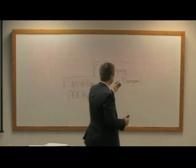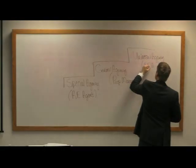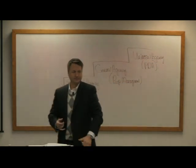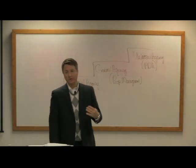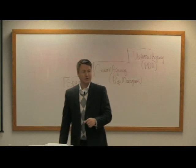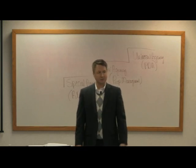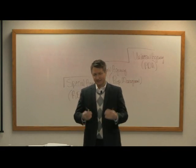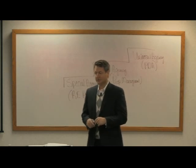At the very top of this tier is universal agency. The example you could see on your test is the power of attorney. Universal agency is limitless. In the real world when we create a power of attorney we set some boundaries, but for the test, think of it as limitless — you're essentially creating your evil twin with universal agency or power of attorney.